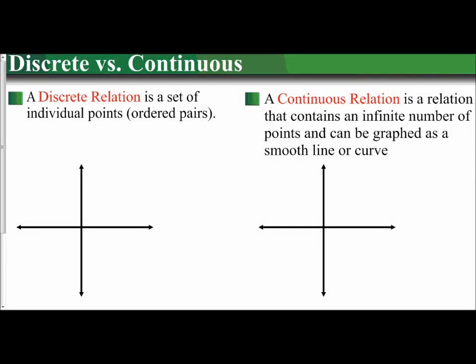The following video will examine how to determine if a relation is considered discrete or continuous. A discrete relation means that it's a set of ordered pairs - there's a beginning, there's an end, it will stop. If I have a discrete relation, it's going to be just a set of points.